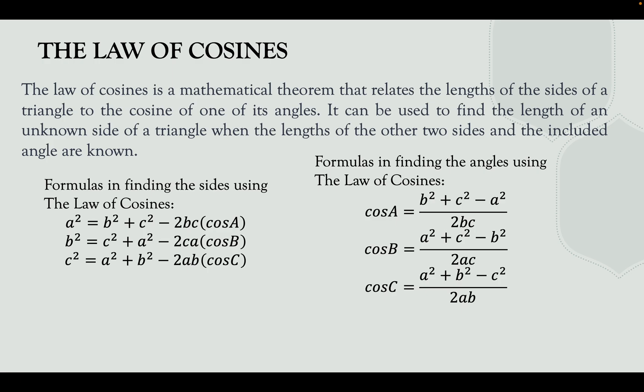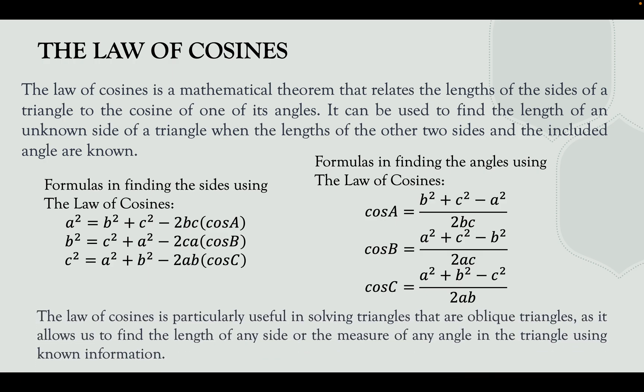To find the angles using the Law of Cosines, we use these formulas: to find angle A, cos A = (b² + c² − a²) / (2bc); to find angle B, cos B = (a² + c² − b²) / (2ac); to find angle C, cos C = (a² + b² − c²) / (2ab).